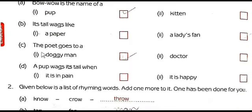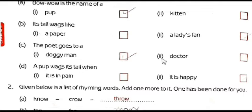Question C: 'The poet goes to...' — to whom does the poet go, or whom does he meet? Option 1: doggy man — meaning a person who knows about the behaviors of dogs, essentially a veterinarian. Option 2: doctor. The poet goes to a doggy man, so option 1 is the right answer. Tick the right mark to option 1.